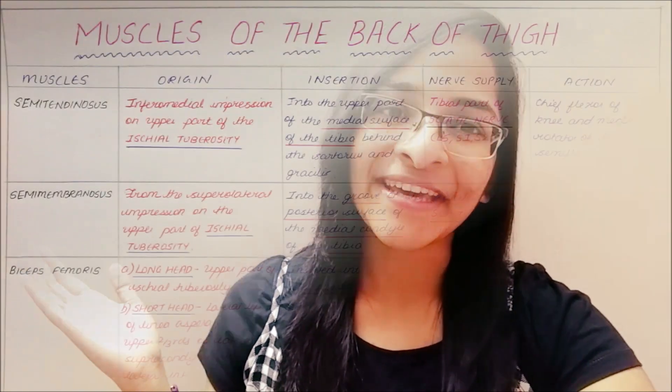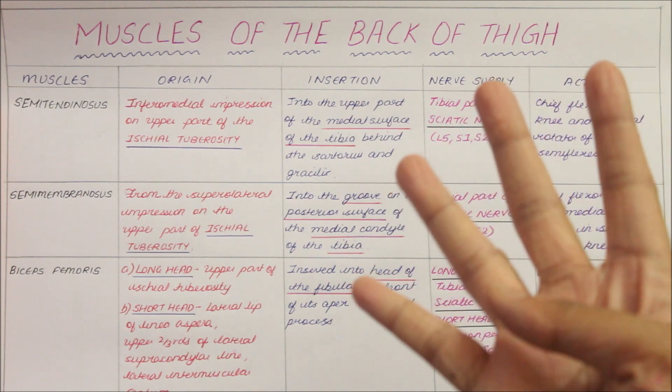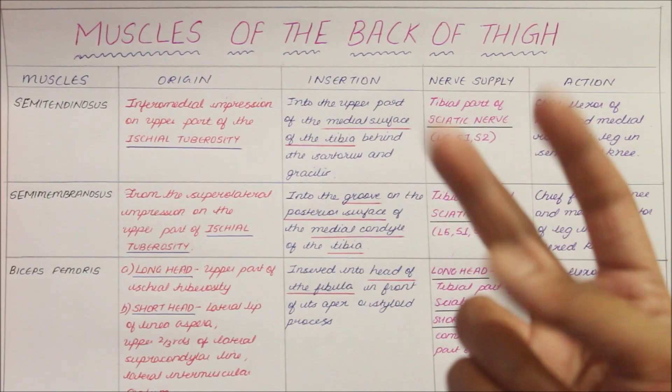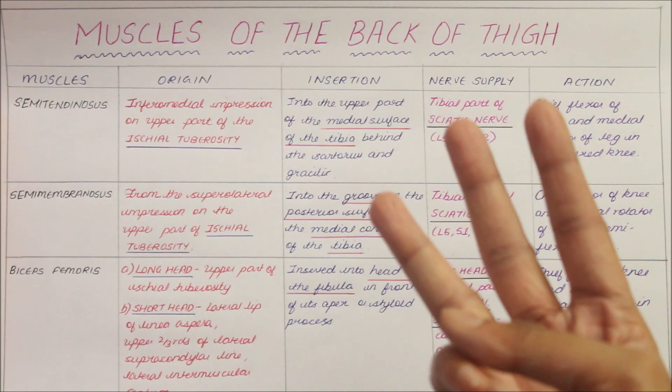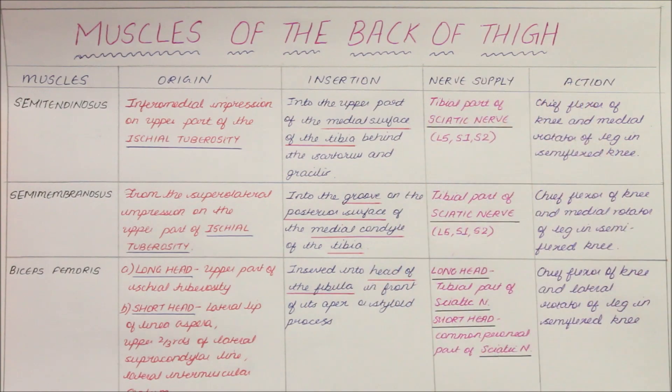Hello guys and welcome back to my channel. In this video we will be learning about the muscles of the back of the thigh. As an introduction, there are four muscles of the back of the thigh: the semitendinosus, the semimembranosus, biceps femoris, and the adductor magnus.